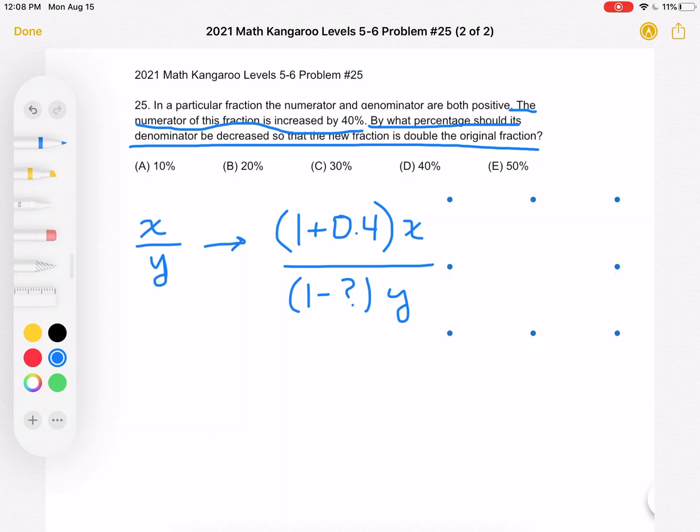This is equal to 2 times the original fraction. So that would be equal to 2x over y. So as you can see, we have x over y on both sides so we can cancel that out.